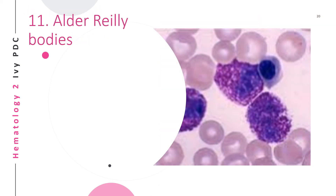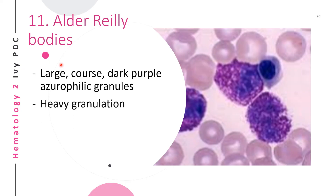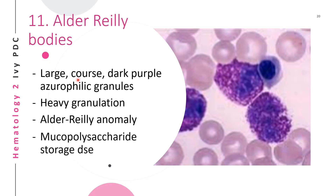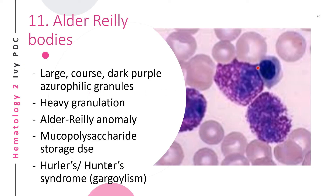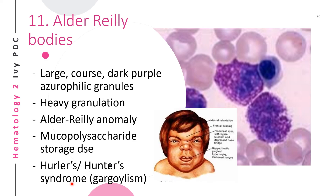The next WBC anomaly is Alder-Reilly bodies — white blood cells with large, coarse, dark purple azurophilic granules showing heavy granulation and deep purple to lilac granules. These cells are seen in Alder-Reilly anomaly, mucopolysaccharide storage diseases, or Hurler's and Hunter's syndrome. Patients with Hurler's or Hunter's syndrome typically have the characteristic gargoylism or gargoyle features.